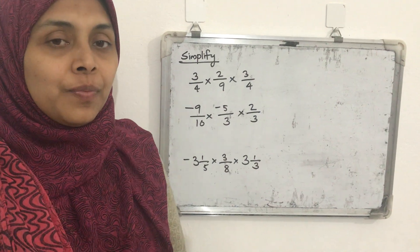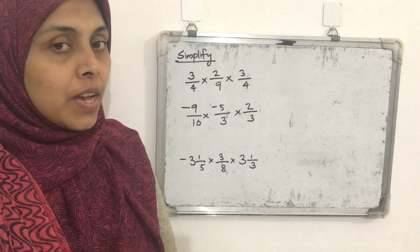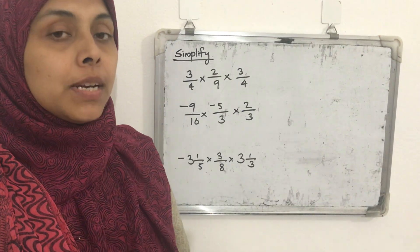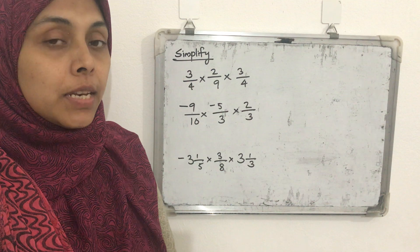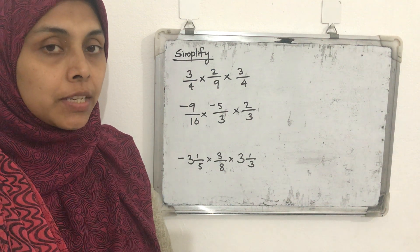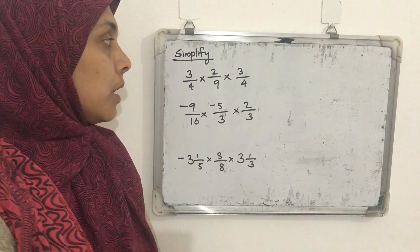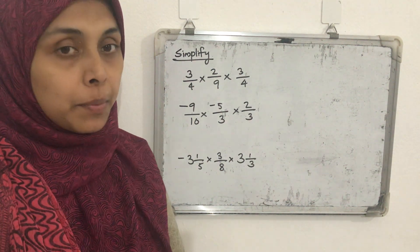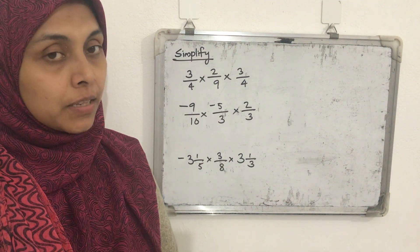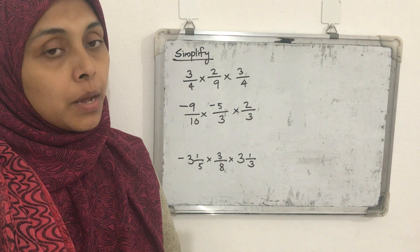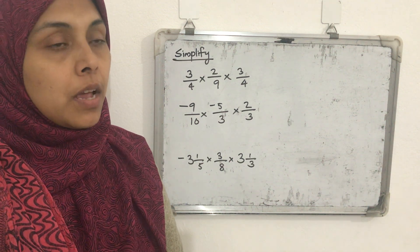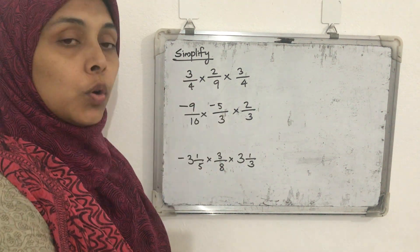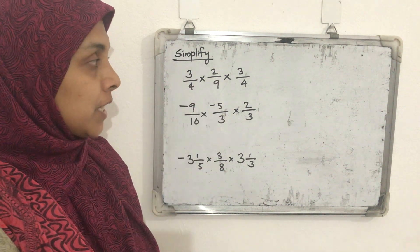Good morning. We are in the chapter on rational numbers. We covered addition and subtraction, and then took up multiplication as well. We discussed some parts of multiplication and some questions from it.